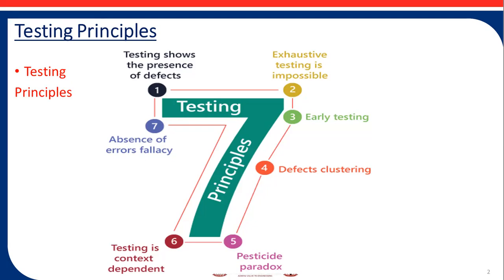The fifth principle is the pesticide paradox. Be aware of the pesticide paradox: if the same tests are repeated over and over again, eventually those tests no longer find any new defects. To detect new defects, existing tests and test data may need changing, and new tests may need to be written. Tests are no longer effective at finding defects just as pesticides are no longer effective at killing insects after a while. In some cases, such as automated regression testing, the pesticide paradox has a beneficial outcome, which is a relatively low number of regression defects.